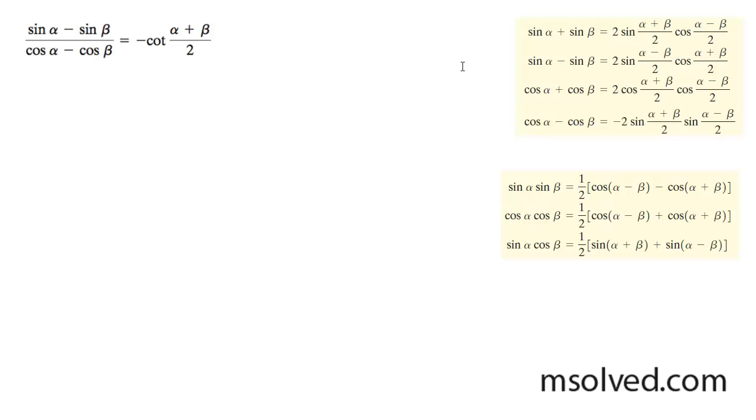Prove the following trig identity. Let's take, for the numerator we'll use the sum to product form, and then for the denominator we'll be using this.